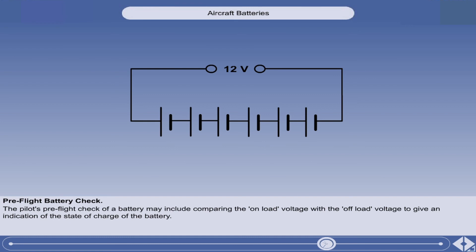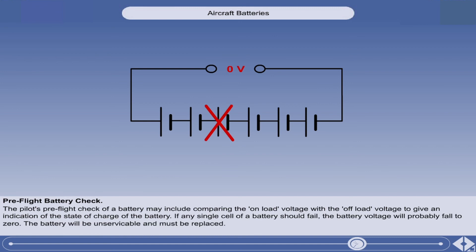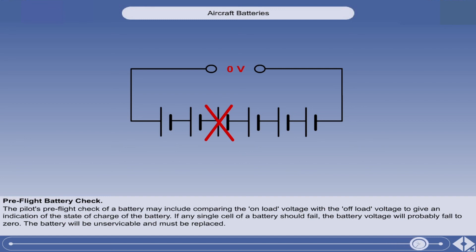A battery is made up of a number of cells in series. If any single cell should fail, the battery voltage will probably fall to zero. The battery will be unserviceable and must be replaced.